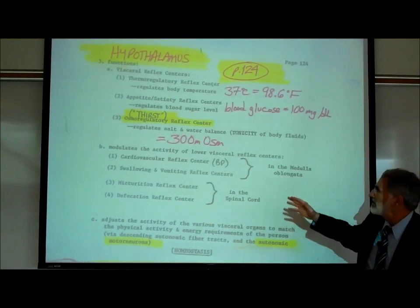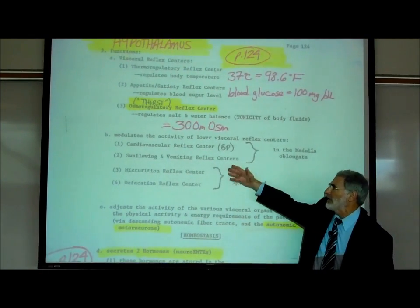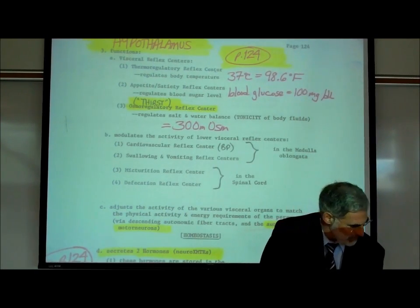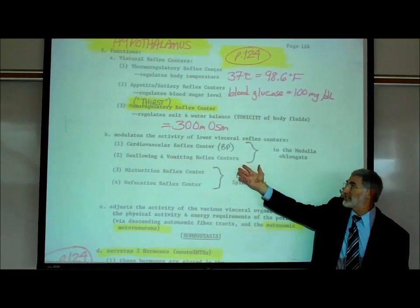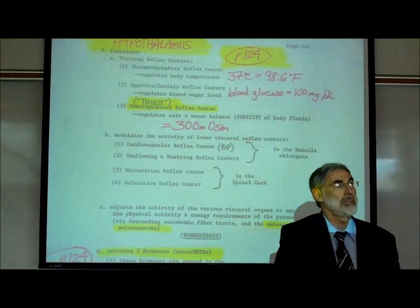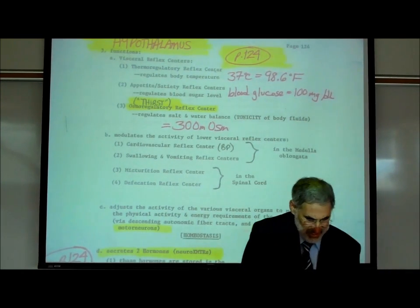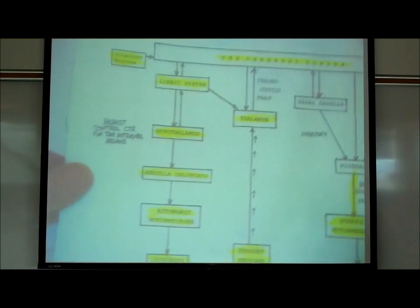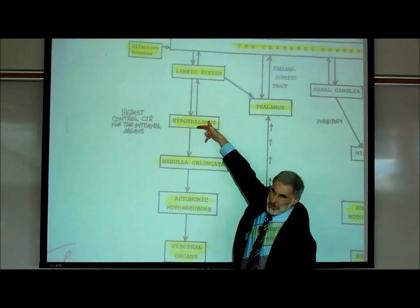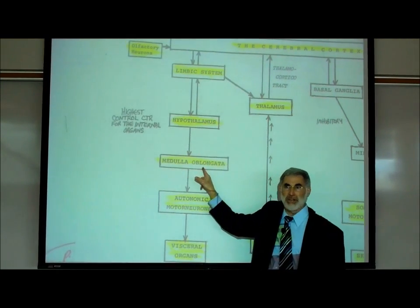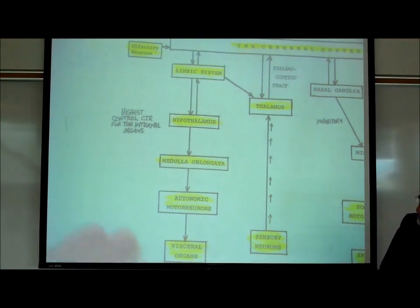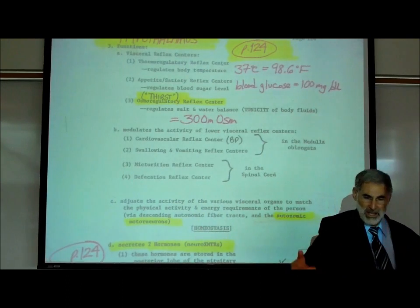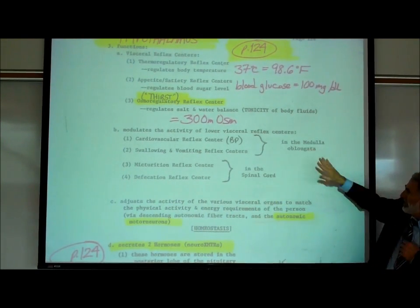Not only does our hypothalamus have these control centers, but it modulates — it can adjust — the activity of control centers lower down in our brain or even in our spinal cord. We mentioned previously that we have a cardiovascular reflex center in the medulla oblongata, and the hypothalamus can send signals down to those control centers. Also in the medulla oblongata are a vomiting reflex center and a swallowing center — the hypothalamus can affect all of these.